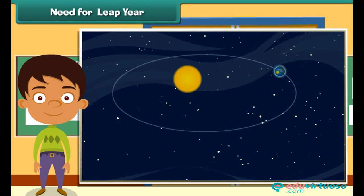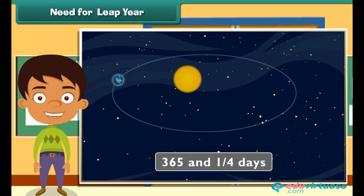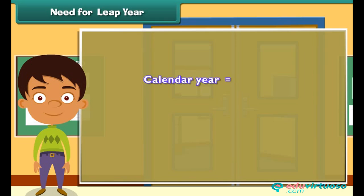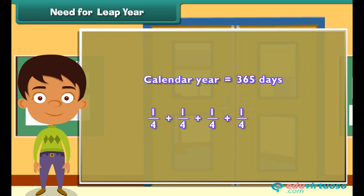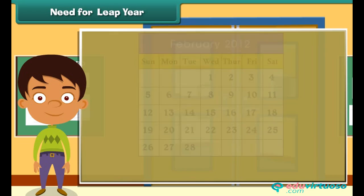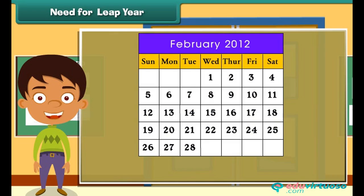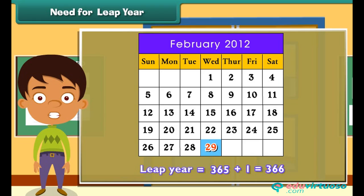Need for a leap year. Earth completes one revolution around the sun in 365 and one-quarter days, but our calendar year has only 365 days. So one-quarter of a day is left out every year. In 4 years, these left-out quarters add up to 1 full day. Hence, every 4 years an extra day is added to February. Such a year is known as a leap year — February has 29 days and the year itself has 366 days.